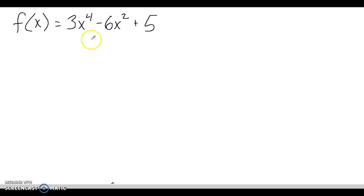The first function we have here is f of x equals 3x to the fourth minus 6x squared plus 5. First, let's recall, in order for a function to be even, f of negative x has to be the same thing as f of x.